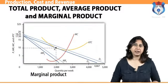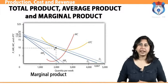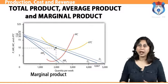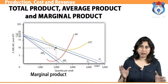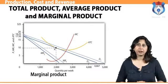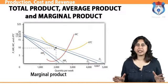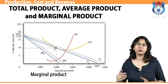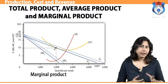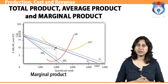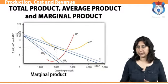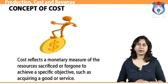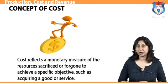Marginal product is defined as the change in total product that comes as a result of a one-unit increase in the variable input. Continuous marginal product is calculated as the derivative of total product with respect to the variable input employed. You can also calculate marginal product by dividing the change in total product by the change in the variable input.